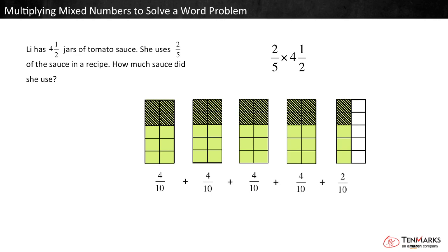Four-tenths plus four-tenths plus four-tenths plus four-tenths plus two-tenths equals eighteen-tenths, or one and eight-tenths. So two-fifths times four and a half equals one and eight-tenths.